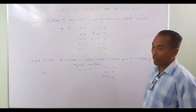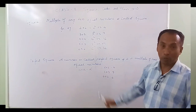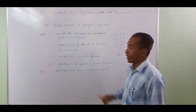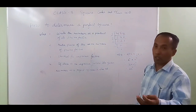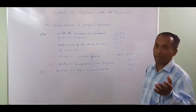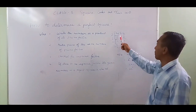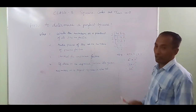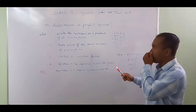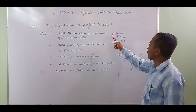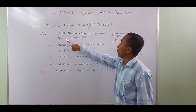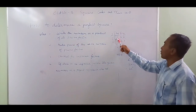Now we know what a square and a perfect square are. The second topic is how to determine a perfect square. For small numbers like 4, 9, 16, 25 it is easy. For a larger number like 484, we use the prime factorization method — writing the number as the product of its prime factors.